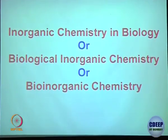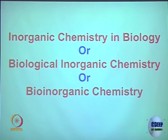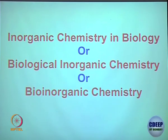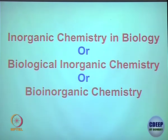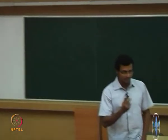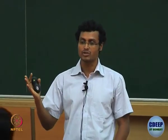Today's class is on inorganic chemistry in biology. What we have seen so far is the role of metal in different fields — in the periodic table, in extraction techniques, in crystal field theory and coordination chemistry, and in magnetochemistry. Now today we will try to see if there is any role of metal in biological systems or in nature in general.